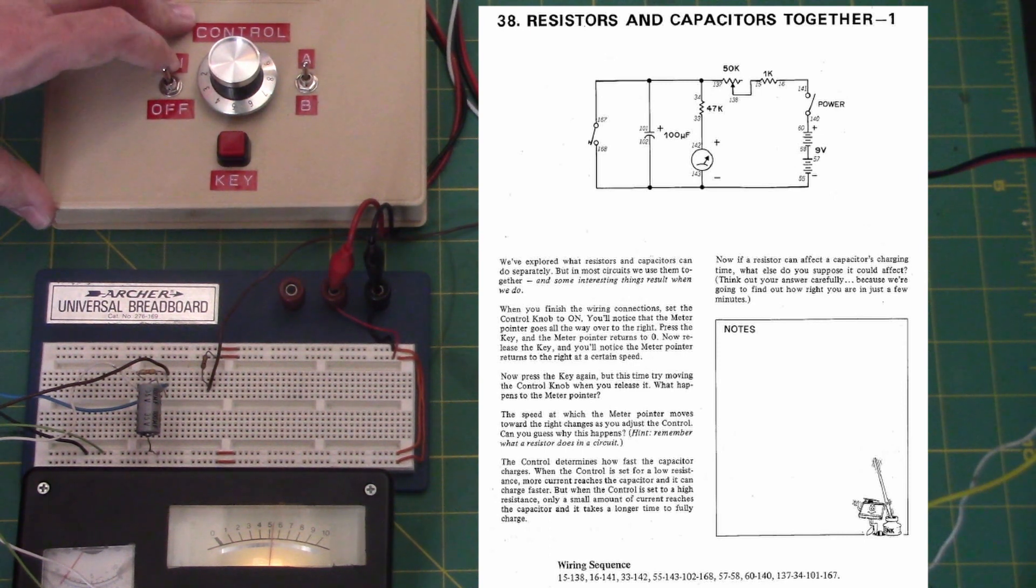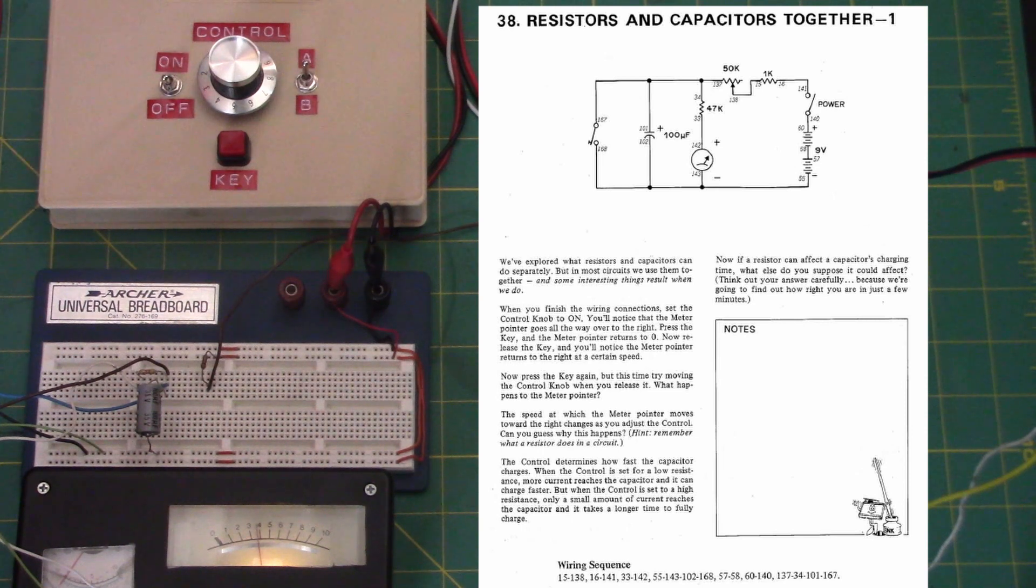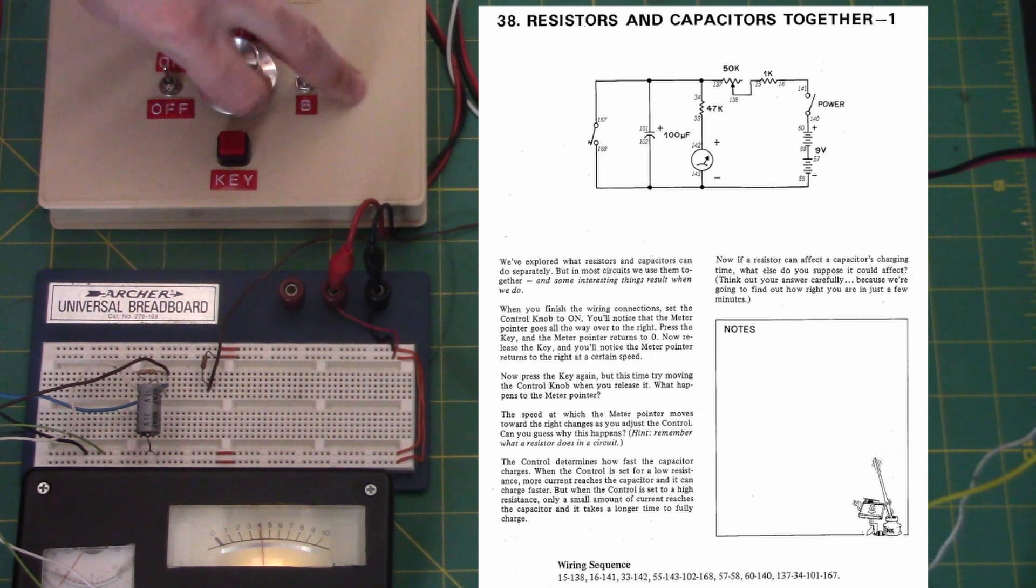If you turn the actual circuit off, it'll just charge a little bit faster, because when you charge it up all the way then set it to high resistance.